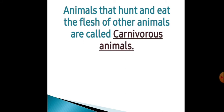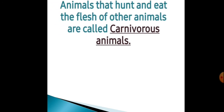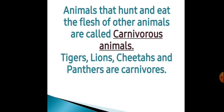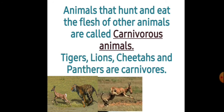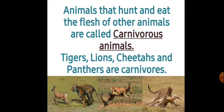Animals that hunt and eat the flesh of other animals are called carnivores. Matlab jo animal hunt karte hain — jo shikaar karte hain, doosre animal ko maar ke unko khaate hain — unko carnivores animals bolte hain. Tigers, lions, cheetahs and panthers are carnivores. Matlab jo wild animals hote hain, mostly woh carnivores hote hain. Woh log pehle dusre animal ke peechhe run karte hain, phir unko pakon se pakadke khaate hain.